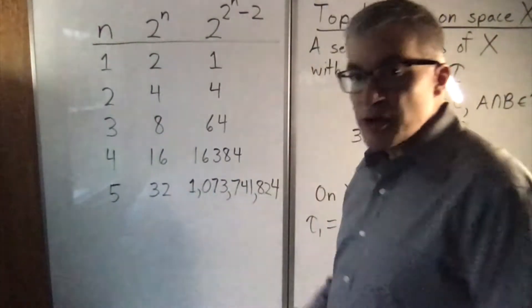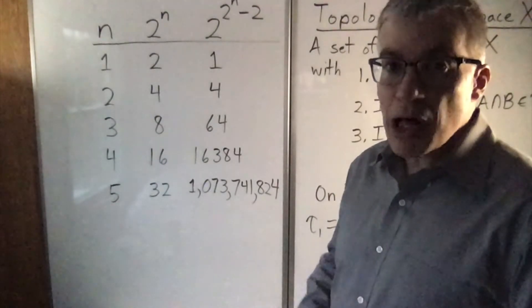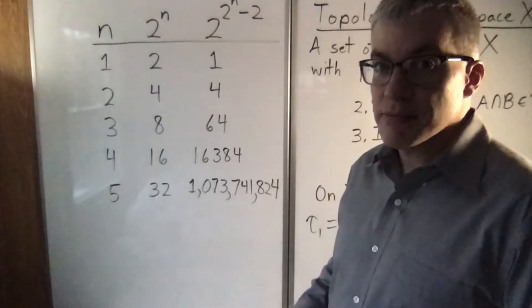Why do I find this column of numbers interesting? Because it's the number of possible candidates for topologies on n points. What does that mean?